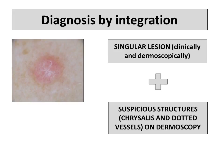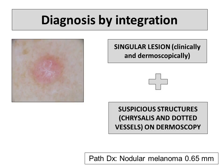Back to our patient. If I integrate the data: this is a singular lesion clinically and dermoscopically, and it also displayed suspicious structures such as chrysalis and dotted vessels on dermoscopy. Therefore this is a suspicious lesion for melanoma. Indeed, this was a nodular melanoma 0.65 mm in thickness.